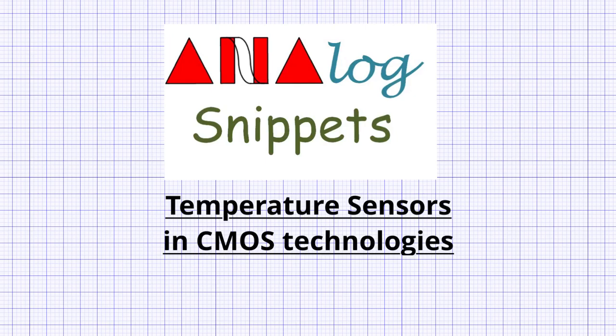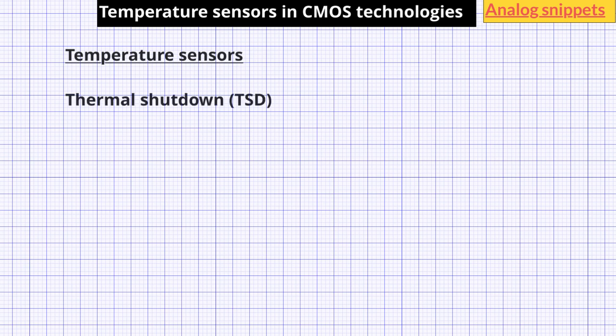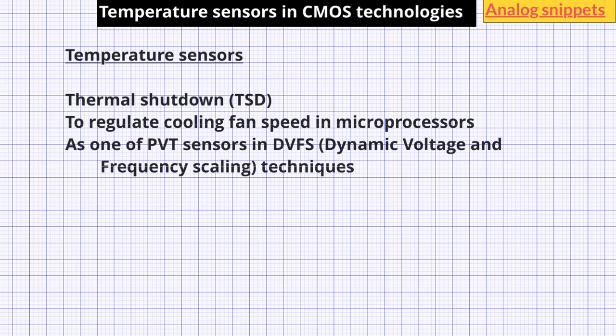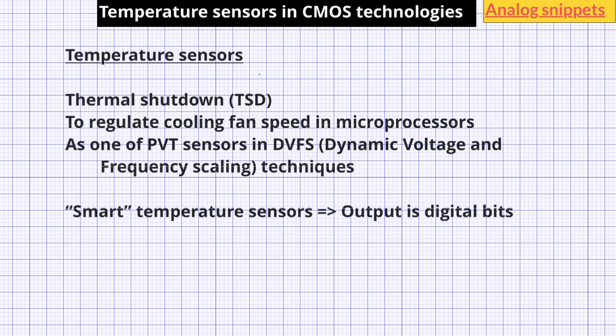Hello everyone, welcome back to Analog Snippets. Temperature sensors are important components of modern chips. They are widely used for thermal shutdown, to regulate cooling fans in microprocessor chips, and as one of the PVT monitors in dynamic voltage and frequency scaling techniques. These temperature sensors are also known as smart temperature sensors, where smart only means that the output of the temperature sensor is a digital output. In this video, I will discuss the most commonly used circuit techniques to design these temperature sensors.